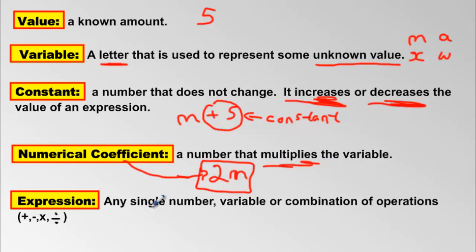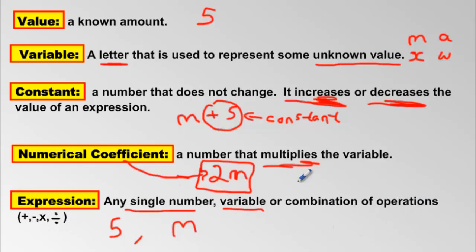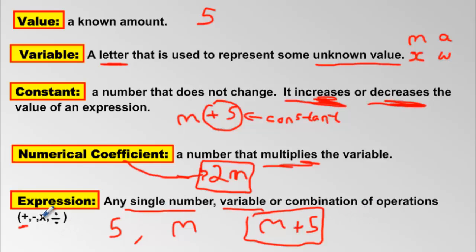An expression is a single number — like five, which is an expression. Or it could be a variable, like M. That is also an expression. Or it could be a combination of operations, like M plus five, or two M for double the mystery amount. The key thing is expressions do not have equal signs. I'm not saying two M equals anything — I'm just saying two M.